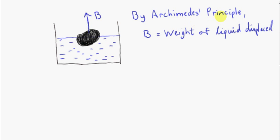We proved Archimedes' principle, which says that the buoyancy force B is equal to the weight of liquid displaced by the object. Now, in this example, the object is only partially immersed, but that doesn't matter.